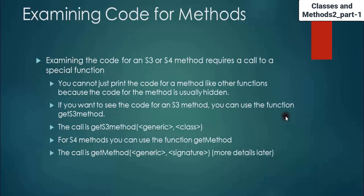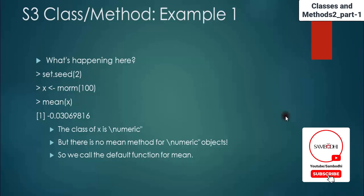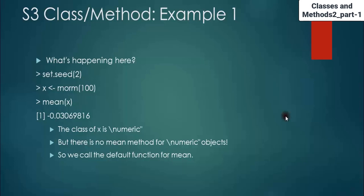I already told you to use set.seed when working with random numbers, to remember what the random number was, because random numbers always change when you use the function repeatedly. Here I'm using set.seed(2), creating X as 100 random numbers with normal distribution, and finding the mean of X. The class of X is numeric, but there is no mean method for numeric objects, so the default function for mean is called and you get the result.